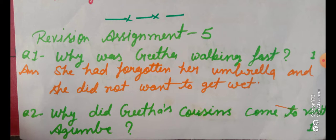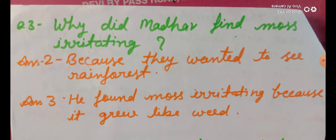Question number 2: Why did Gita's cousins come to visit Agumbe? Answer: Because they wanted to see the rainforest. Kyunki woh rainforest dekhna chahathe thi.